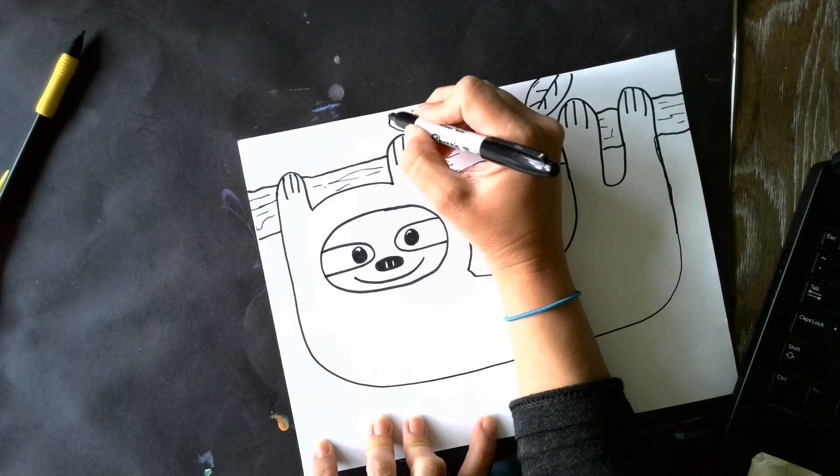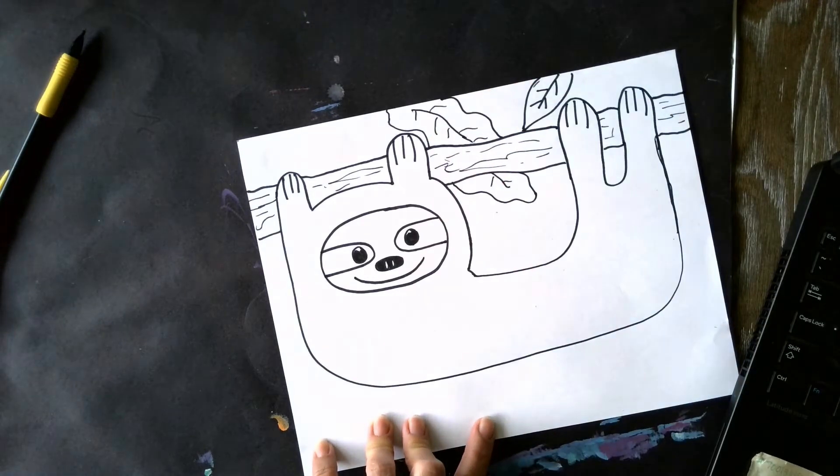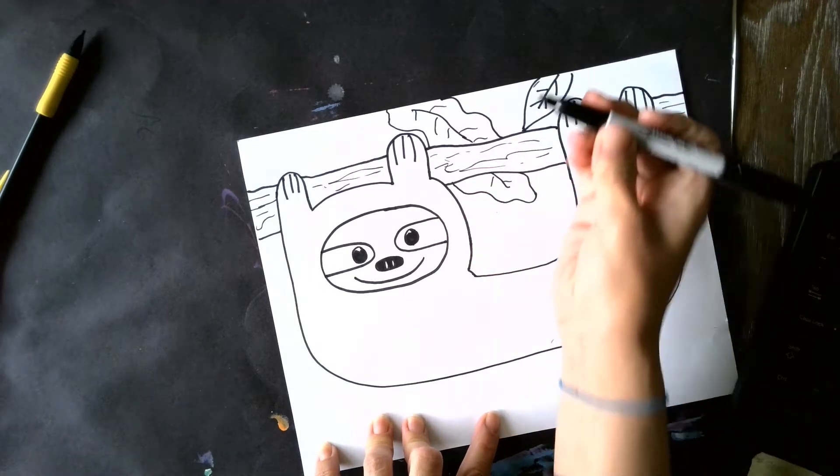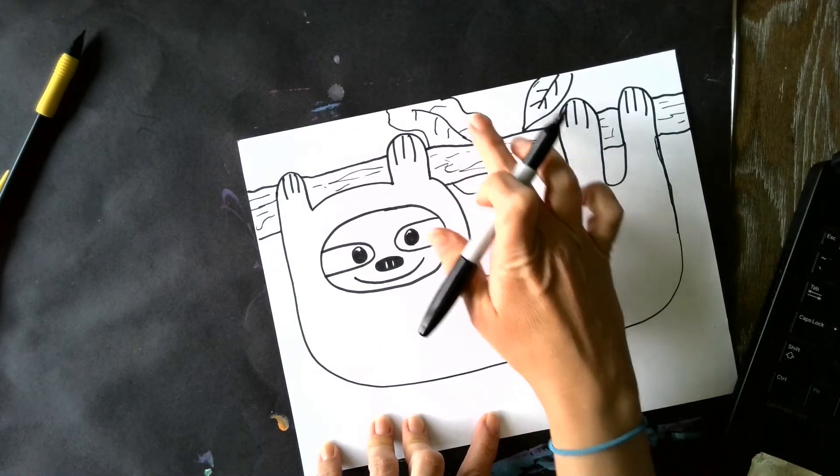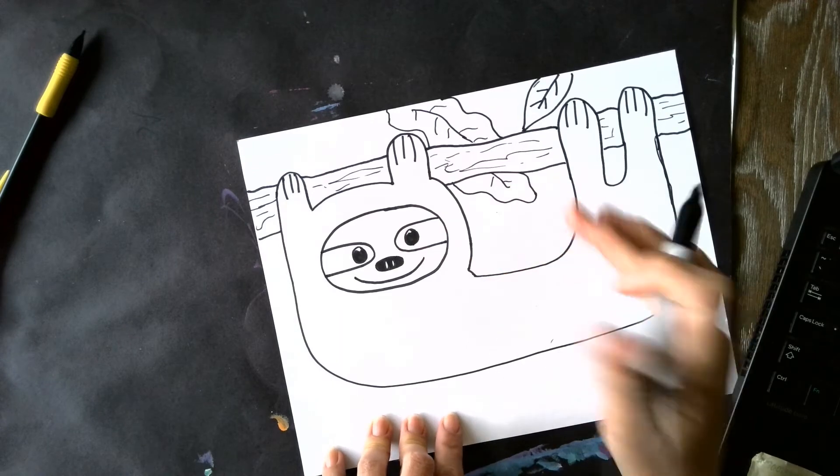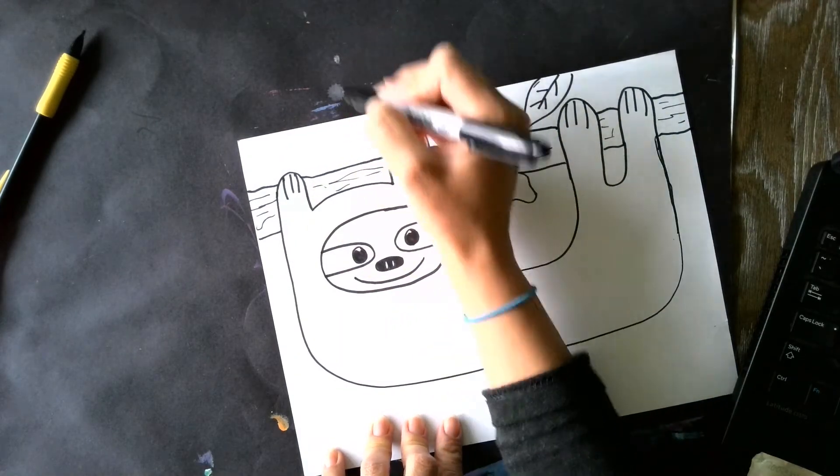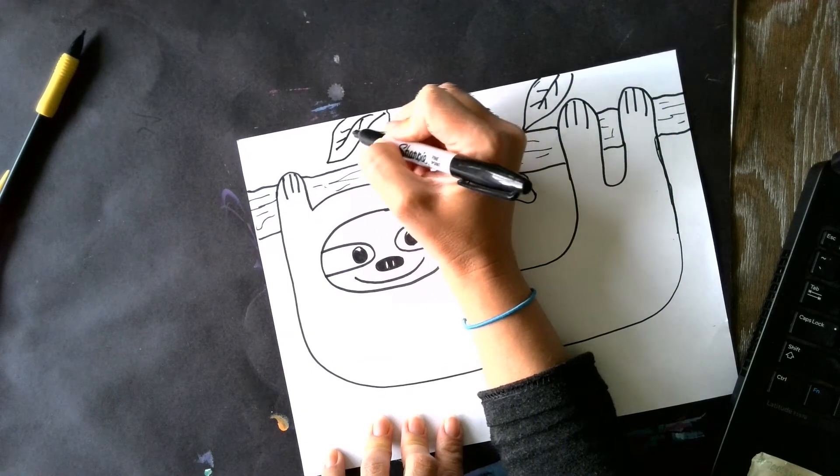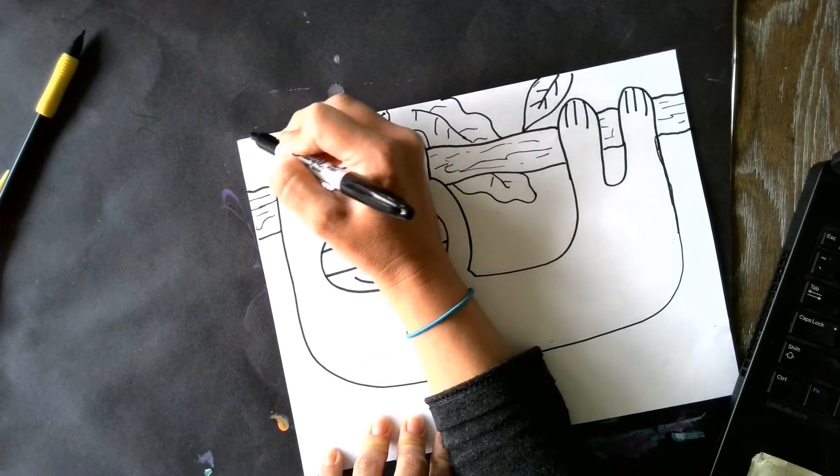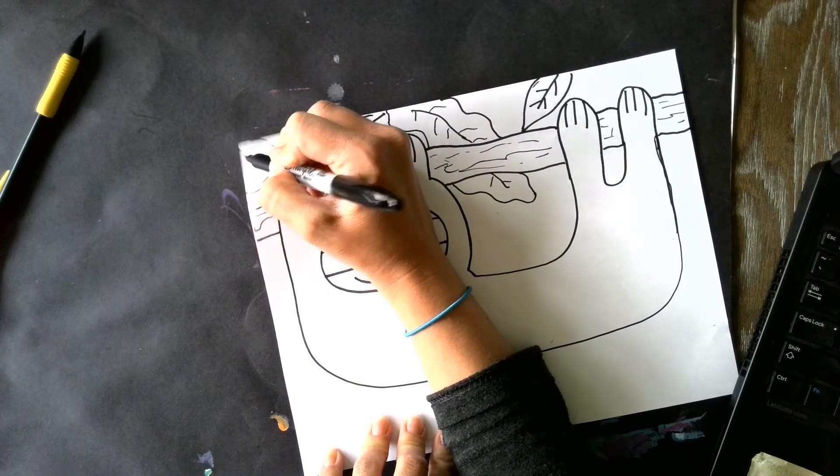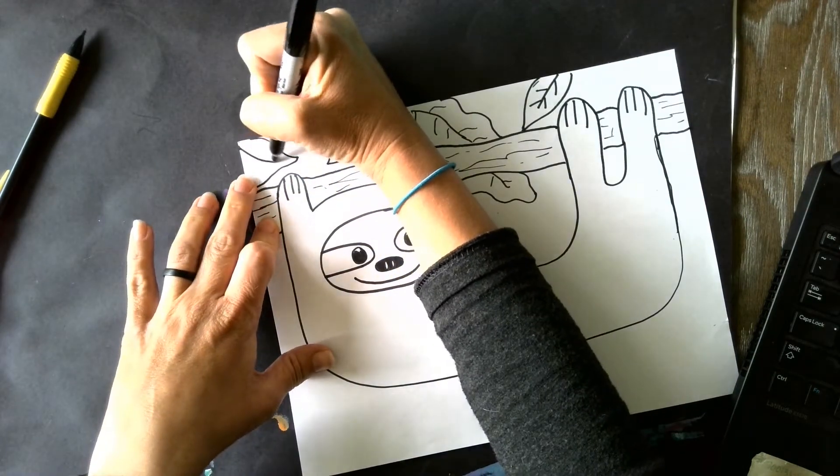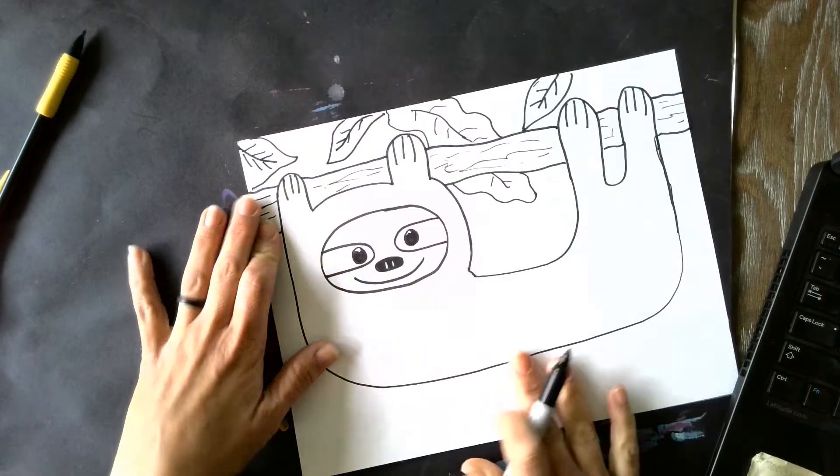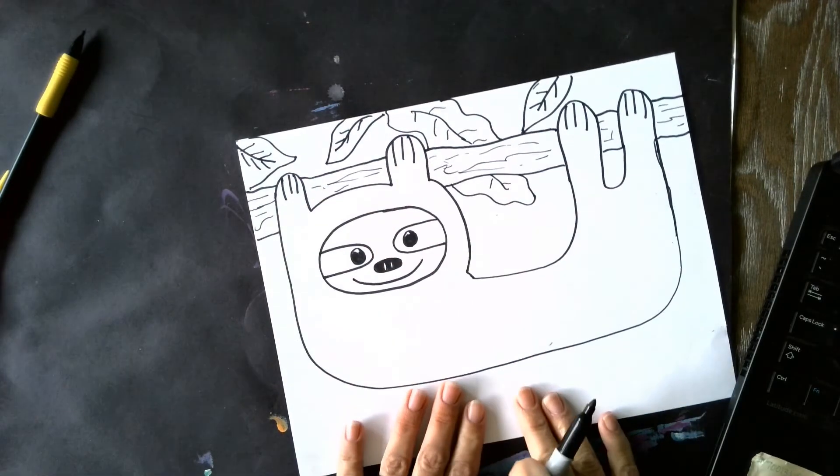I can hear my dog dreaming over there. He's probably chasing something in his dream. So notice I went behind. I didn't draw over it because I used Sharpie, so I can't erase this line. So that's why I made it look like this leaf is going behind. And then maybe I'll make another leaf or two over here. So that's how I did my leaves.